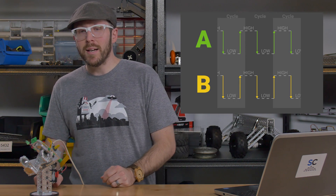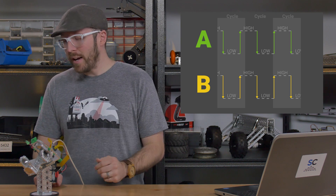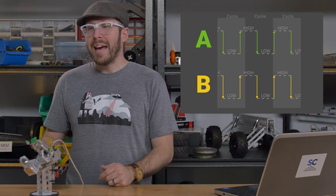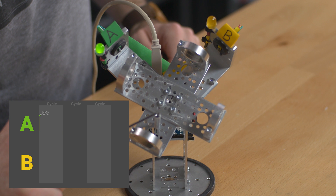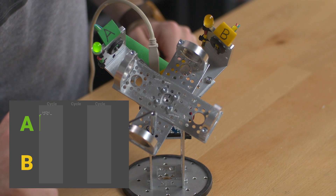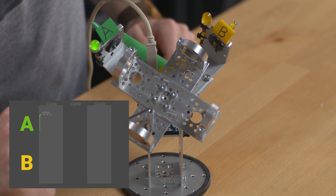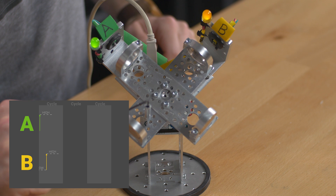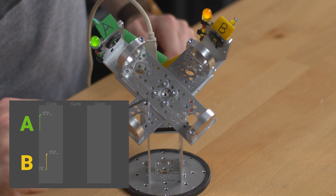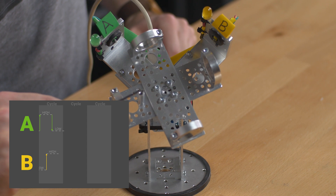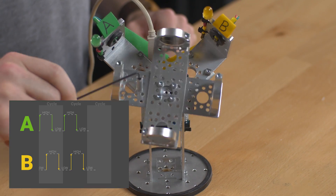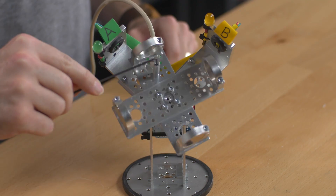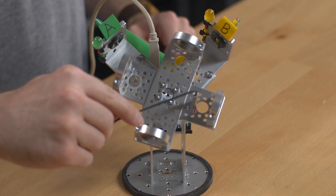Essentially, this means that of the two states each sensor has, those two states are always going to be half a state apart. As I rotate the rig in the clockwise direction, first channel A lights up because it's within range before channel B is within range. Channel B goes high right as channel A is halfway through its high state. Then channel A turns off when channel B is halfway through its high state. Thus you can tell what direction it's turning — rotating clockwise, A is always going to lead B, and rotating counterclockwise, B is always going to lead channel A.